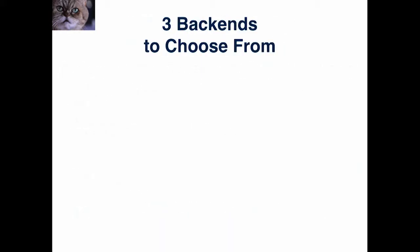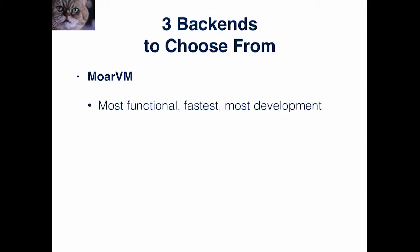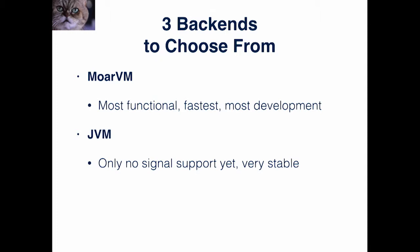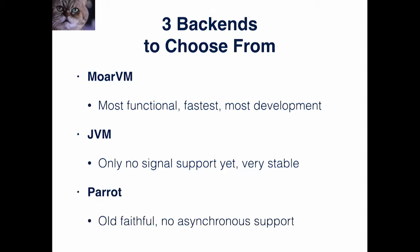You now have three backends to choose from for Rakudo. That's MoarVM, which is the most functional, the fastest, and the most developed, as Jonathan has shown today and the day before yesterday. We have the JVM, which is almost the same in support except for signals at the moment. And we have Parrot, which is the old faithful, but it has no asynchronous support and is now severely lacking in performance compared to the other ones.